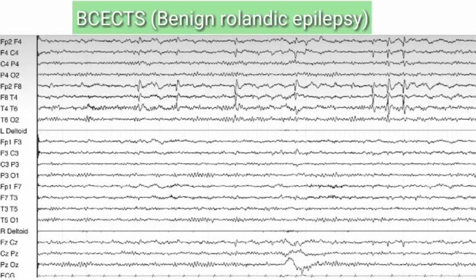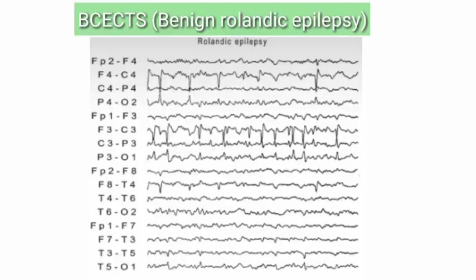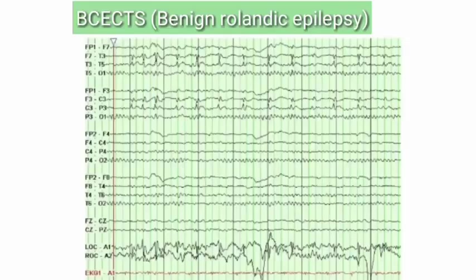Benign childhood epilepsy with central temporal spikes, also called benign Rolandic epilepsy: you will see spikes in the central and temporal areas. The EEG shown here demonstrates spike activity in the central and temporal areas — that is Rolandic epilepsy. To describe this EEG: spikes are seen in the central and temporal area, which is the characteristic finding of benign Rolandic epilepsy.